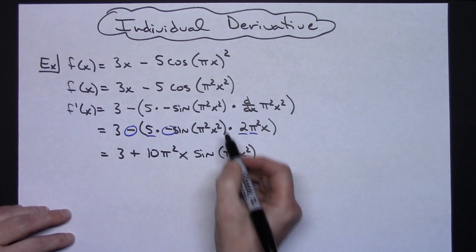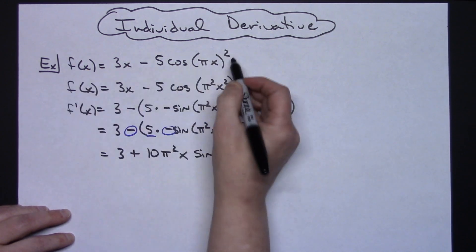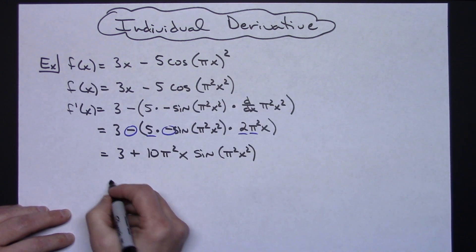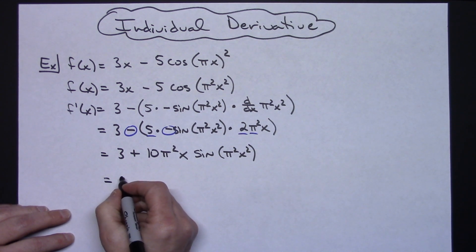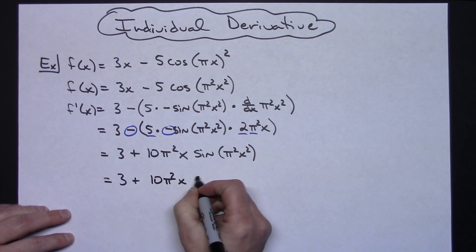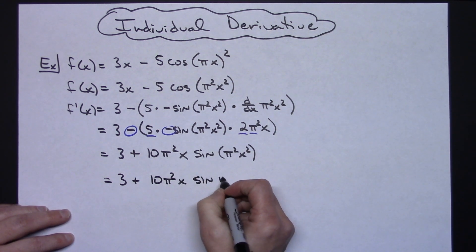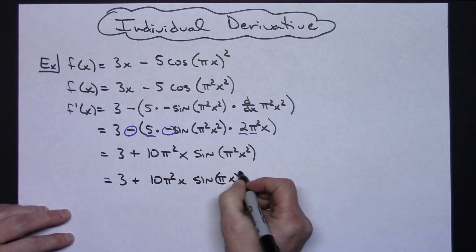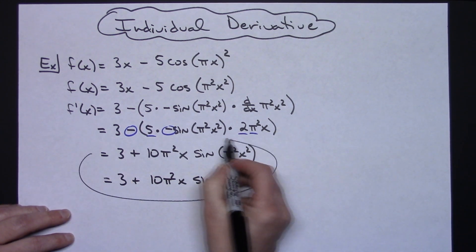If you would want to make this look more like that original function you could go ahead and pull that 2 back out giving your final derivative being a 3 plus 10 pi squared x sine pi x squared. So really either one of those would work.